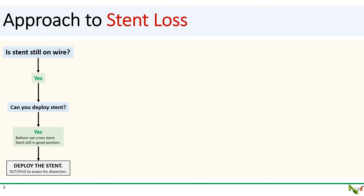In this situation, the first thing you need to do is ask yourself if your stent is still on the wire. If the answer is yes, then ask yourself whether you can just deploy the stent where it is. If the answer is also yes — in other words, if your stent is still in a reasonable position and you can get a balloon to cross — then the solution is just to deploy the stent.